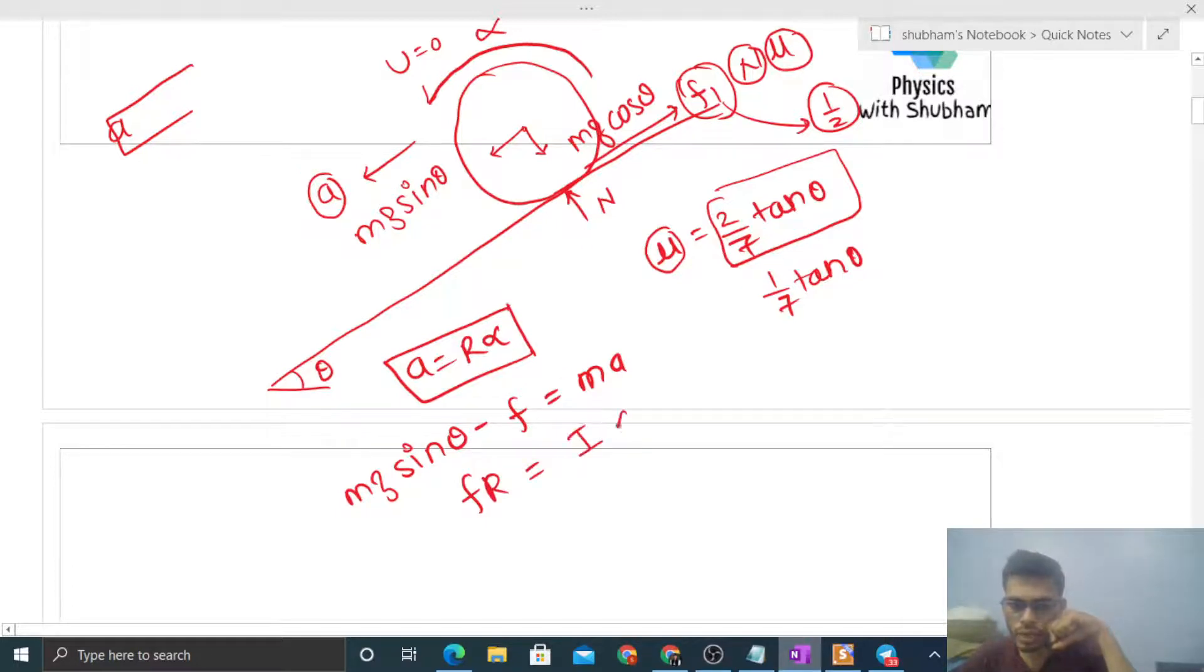Now, if I halve the friction force value, see mg sin theta will remain constant. If we halve friction's value, then the linear acceleration's value will increase. On the other hand, if we halve the friction force value, then alpha's value will decrease.